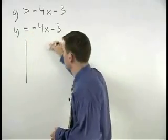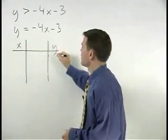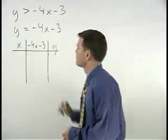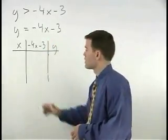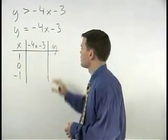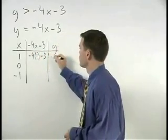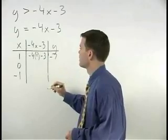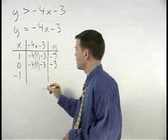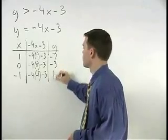So setting up our chart, we have our x's, our y's, and negative 4x minus 3. Plugging our values of 1, 0, and negative 1 in for x, we find that y equals negative 4 times 1 minus 3 or negative 7. Negative 4 times 0 minus 3 or negative 3. And negative 4 times negative 1 minus 3 or positive 1.